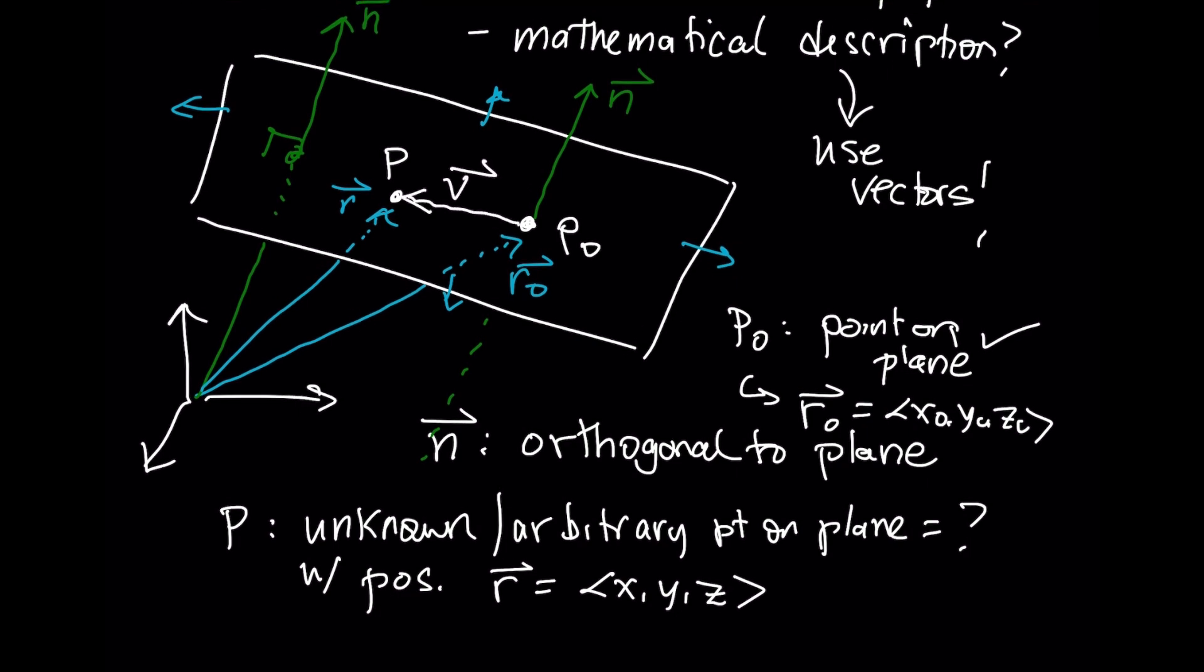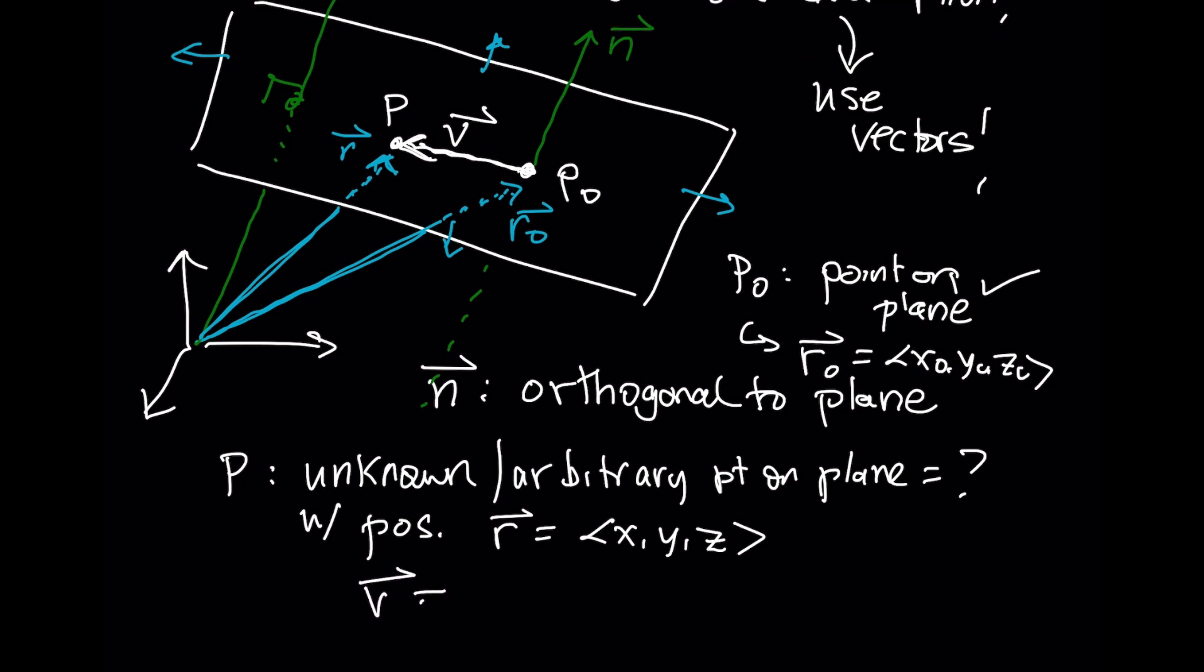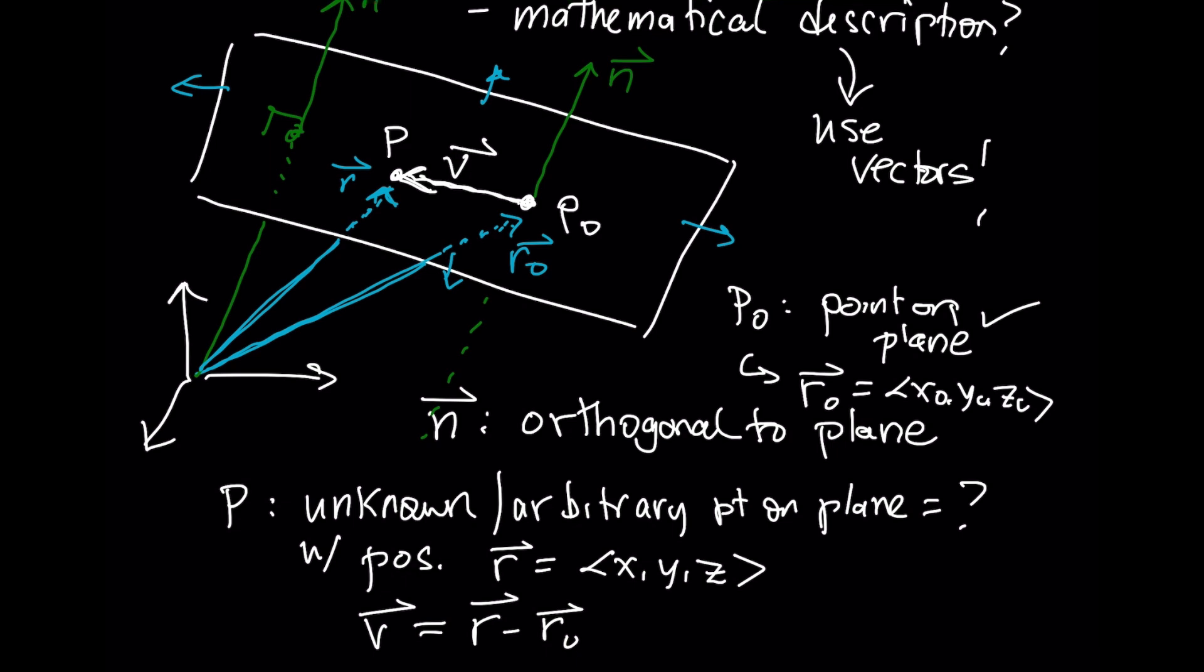If you were to use the tip-to-tail rule for addition, this vector R₀ plus the vector V should give you R right there. This vector V is R minus R₀. From this picture above, N is orthogonal to V.